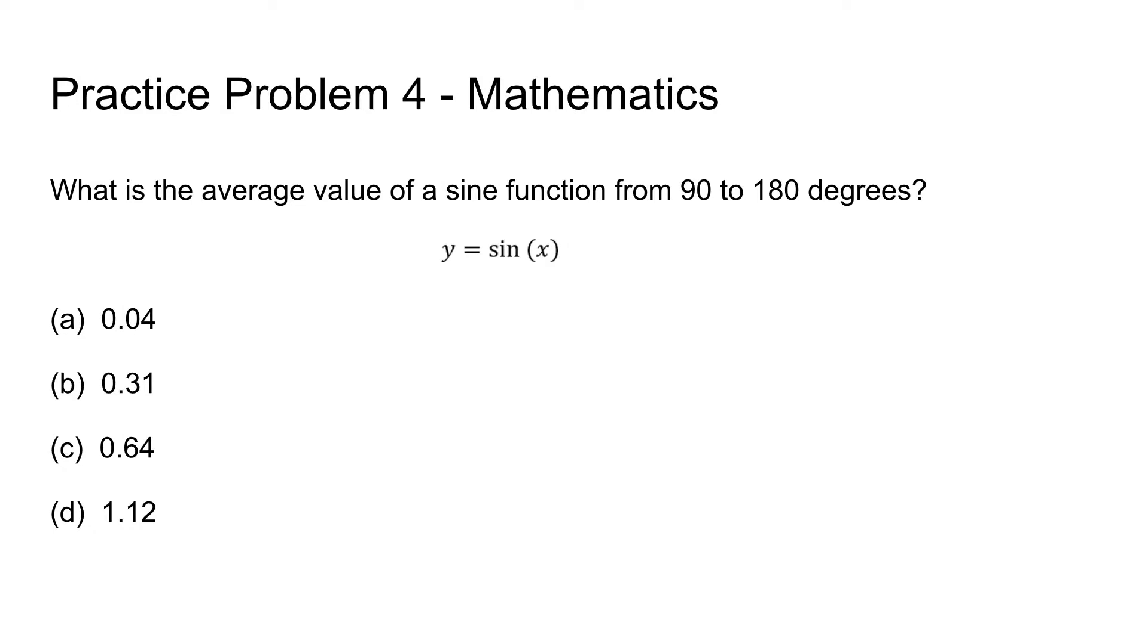In order to solve this problem, you need to understand what average value is. Basically, when you want to find the average value, you take the sum and divide it by the total number of values. So when you have a function, you are going to find the sum by finding the integral or the area under the curve. In this case, it's from 90 to 180 degrees.